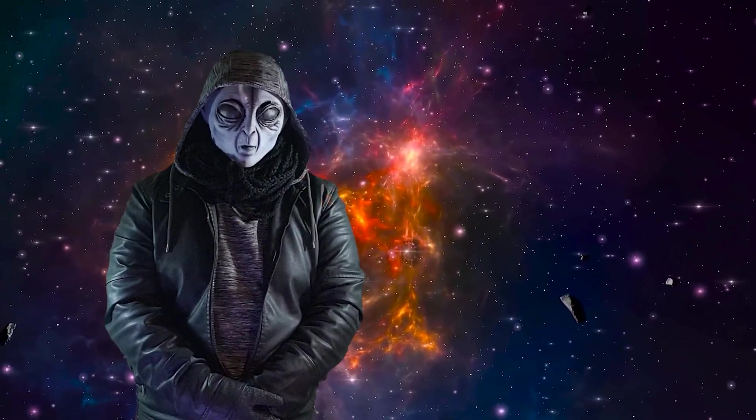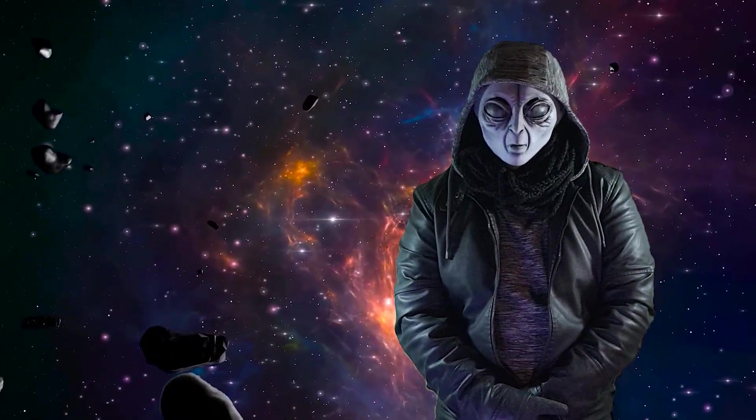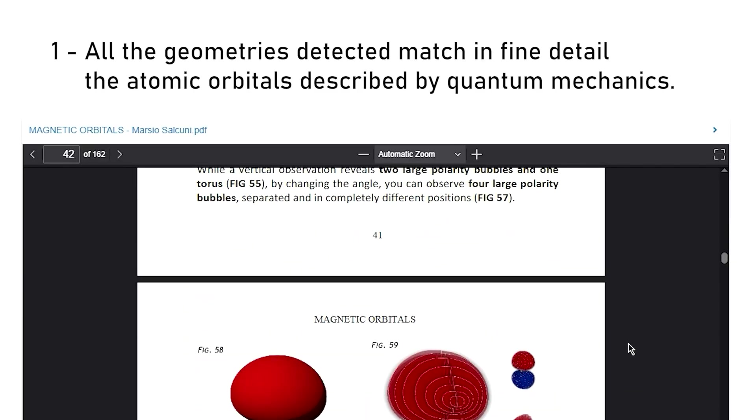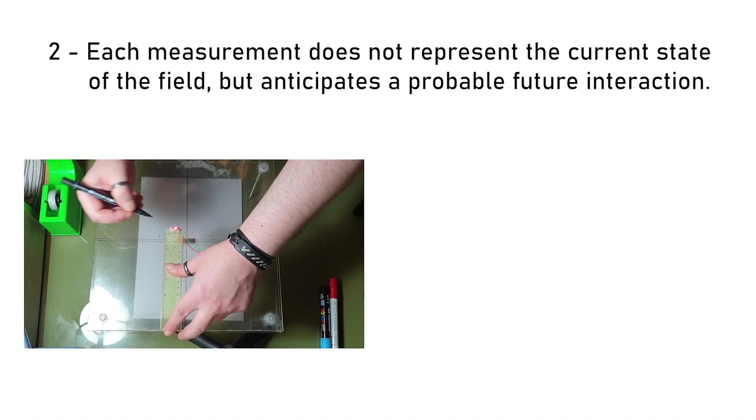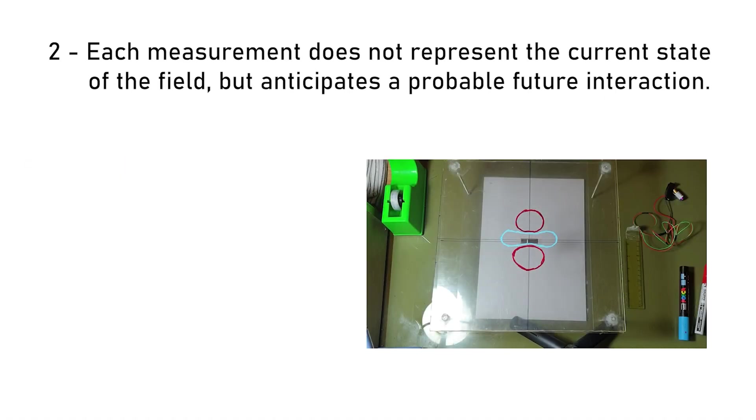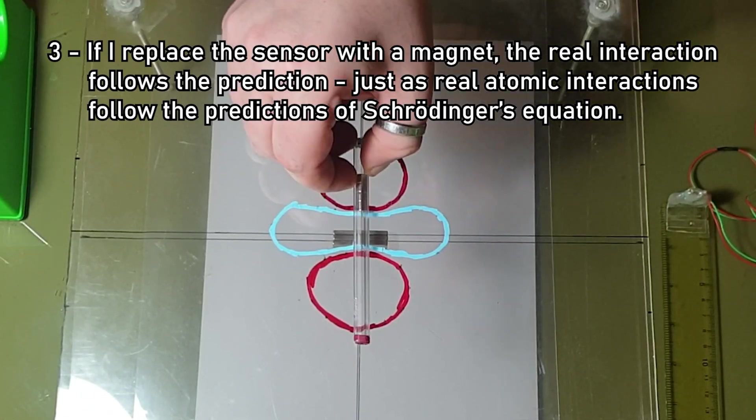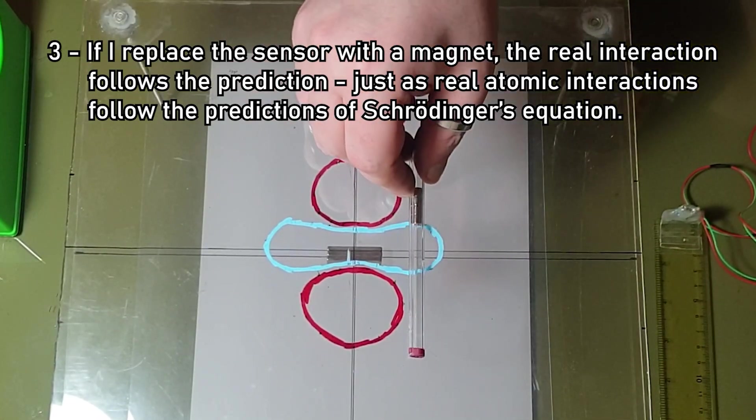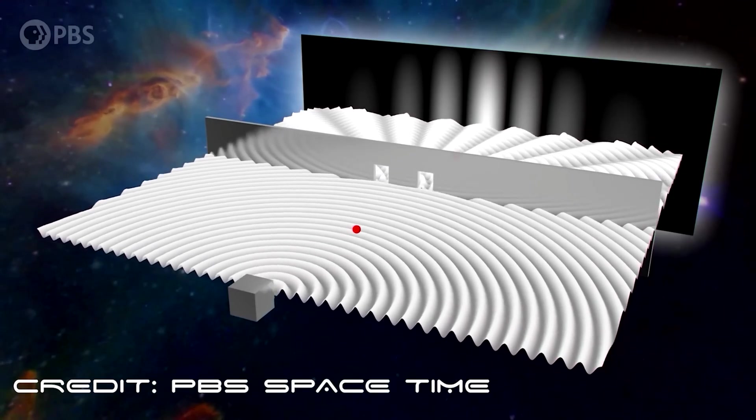Up to this point, the experimental confirmations of Marcio's hypothesis, that all of this follows the rules of quantum mechanics, are four. One, all the geometries detected match in fine detail the atomic orbitals described by quantum mechanics. Two, each measurement does not represent the current state of the field, but anticipates a probable future interaction. Three, if I replace the sensor with a magnet, the real interaction follows the prediction, just as real atomic interactions follow the predictions of Schrodinger's equation. Four, the construction of the shapes is comparable between electronic probability distributions and the magnetic intensity that decreases with distance. Put these clues together and the picture becomes clearer.